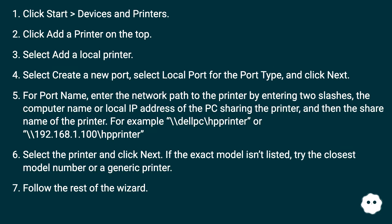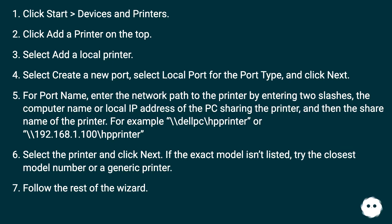In Windows Vista and 7: click Start, then Devices and Printers. Click Add a printer on the top and select Add a local printer. Select Create a new port, select local port for the port type, and click Next. For port name, enter the network path to the printer by entering two backslashes, the computer name or local IP address of the PC sharing the printer, and then the share name of the printer. For example: \\delpc\hp printer or \\192.168.1.100\hp printer.